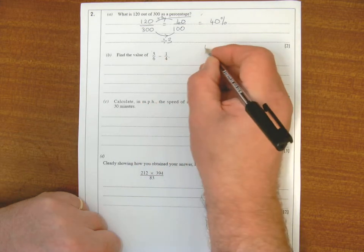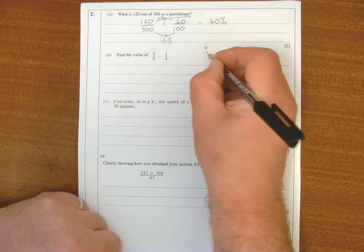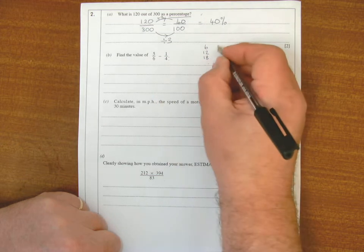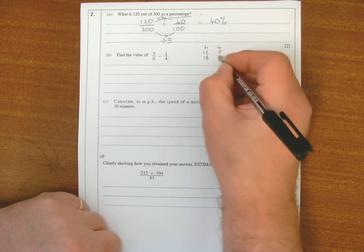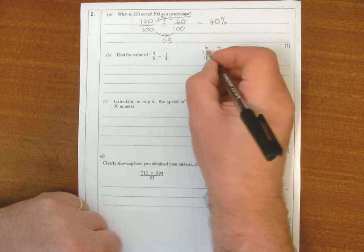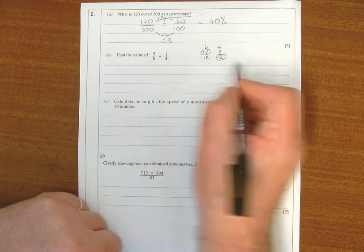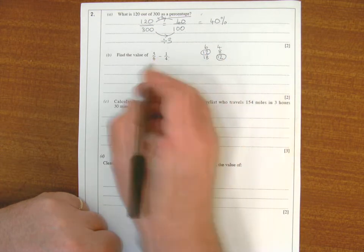The 6 times table: 6, 12, 18 and so on. The 4 times table: 4, 8, 12. As you can see, the first number I come to in both tables is 12, so I'm going to change both these fractions to be over 12.